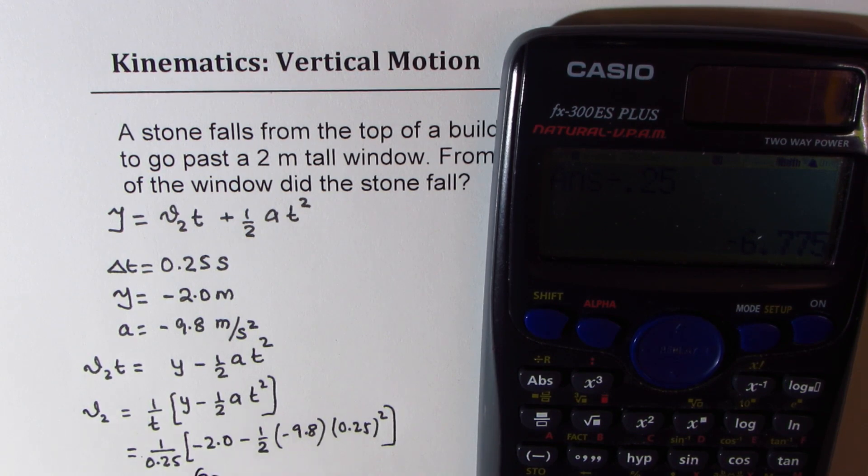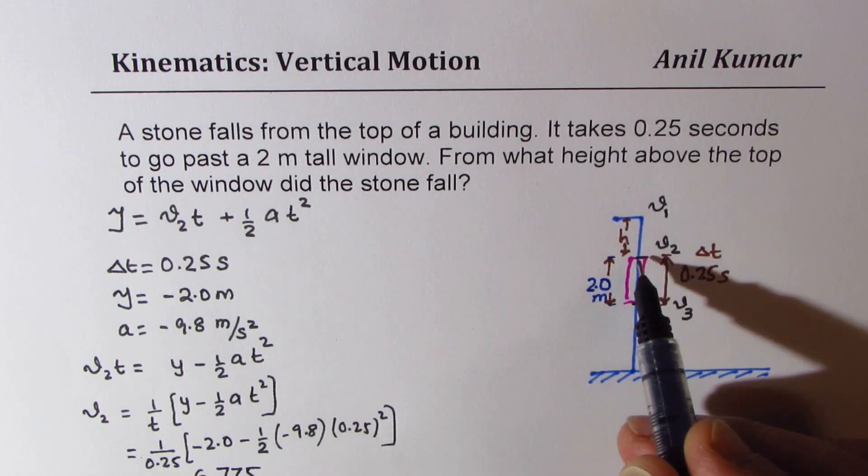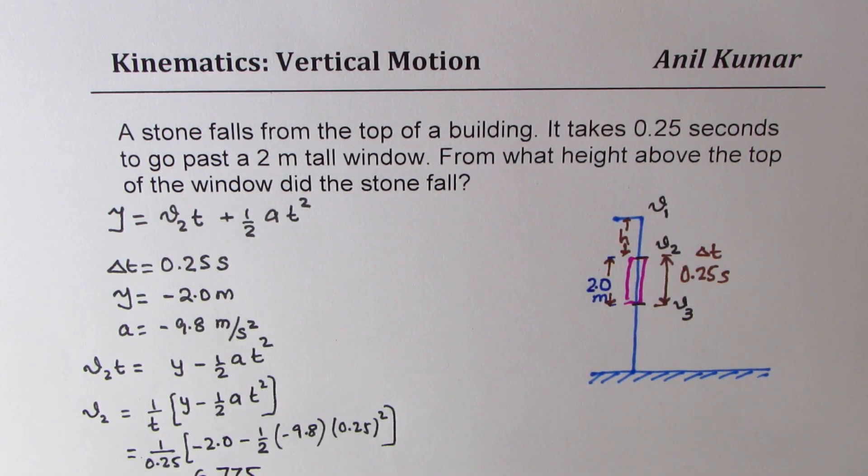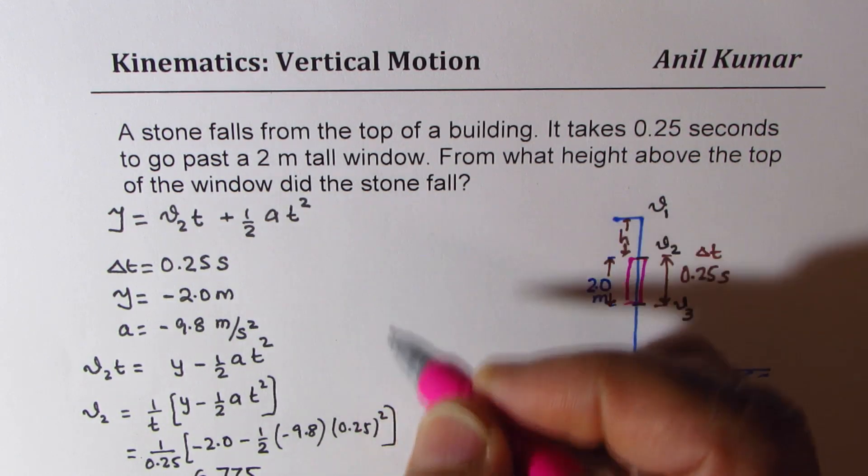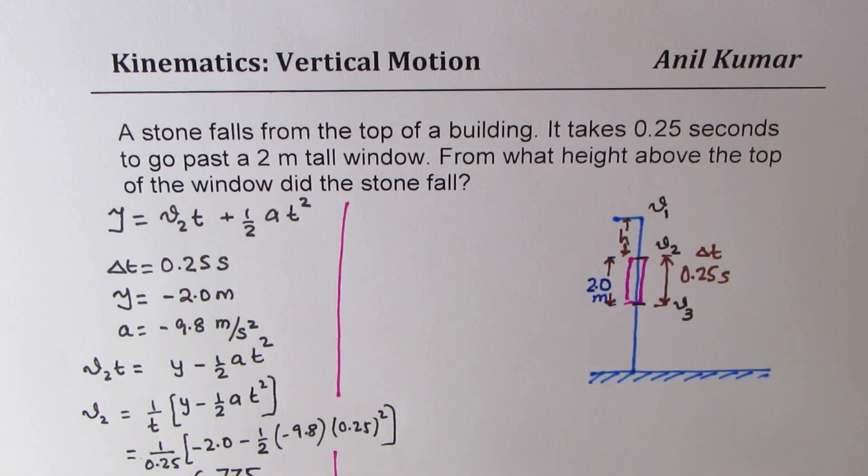In decimals it equals minus 6.775, so that is the velocity at this point, v2. We get one value for velocity, which is minus 6.775 meters per second.